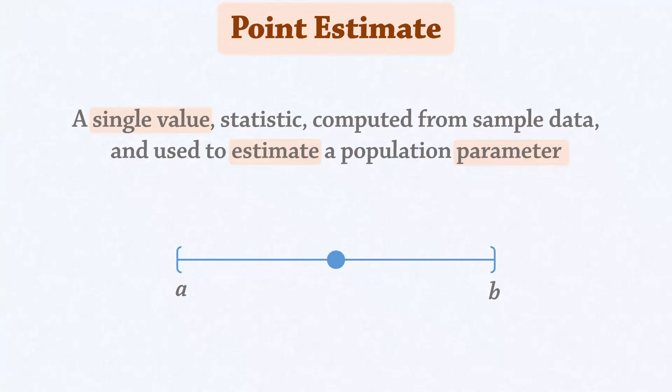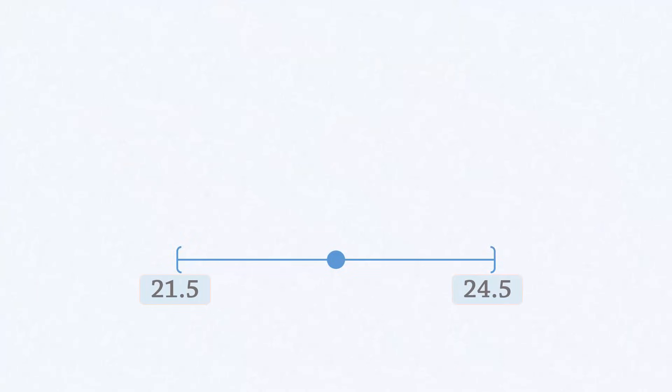For example, suppose we found that the mean age of students at the college lies between 21.5 and 24.5. This range of values is an interval estimate which we refer to as the confidence interval.